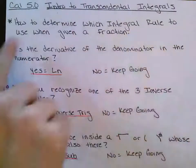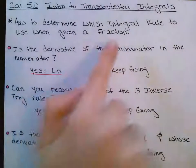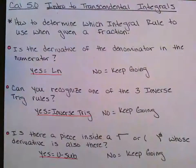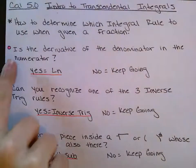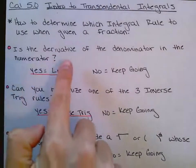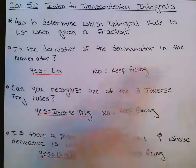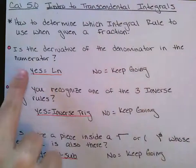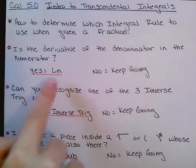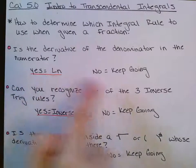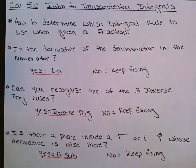The first one says: is the derivative of the denominator in the numerator? Then that's a u-prime over u, so if you can spot that, then it's an LN question.